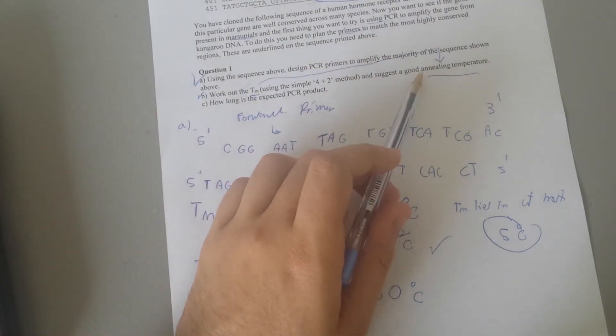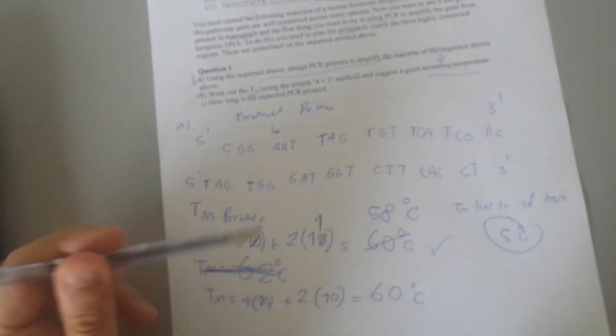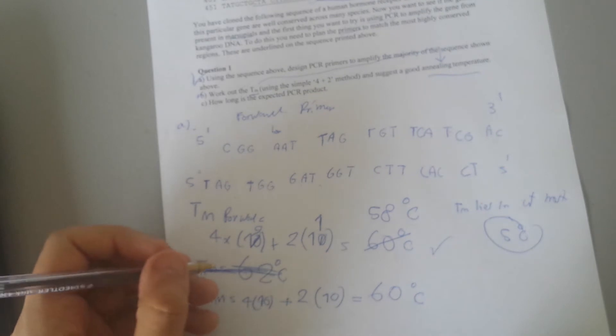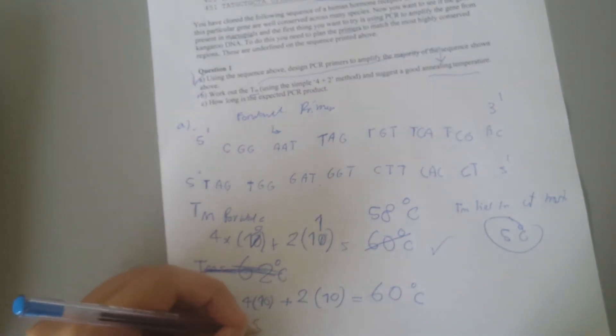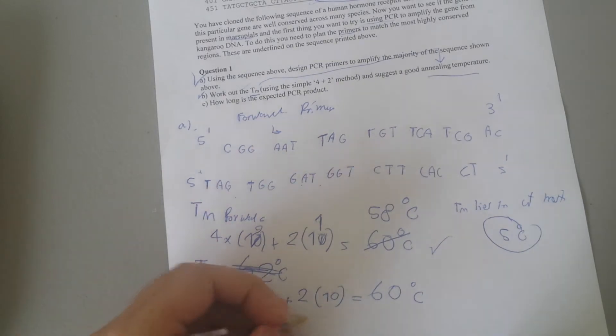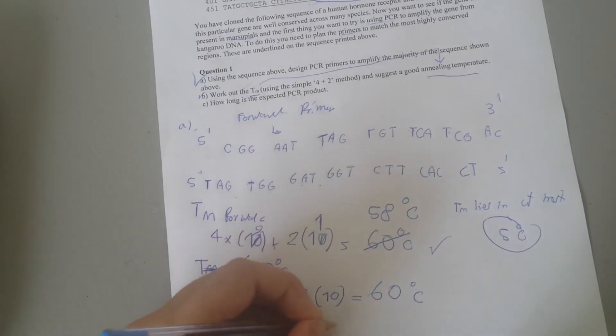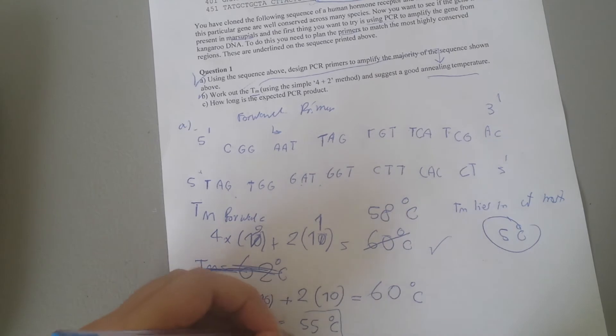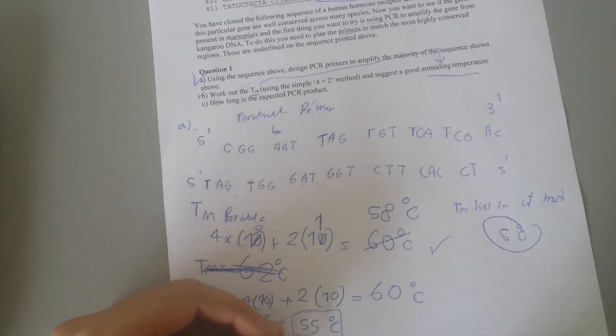Now it asks you to suggest a good annealing temperature. Annealing temperature is the TM minus five degrees Celsius. Here I'm going to choose 55 degrees Celsius as my annealing temperature. It is okay, you don't have to necessarily be between a specific range, 50 or 55 degrees Celsius is okay.